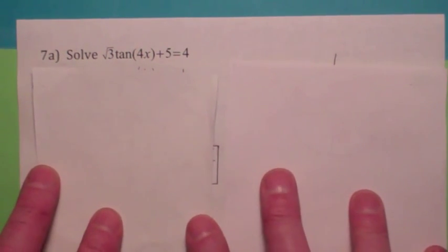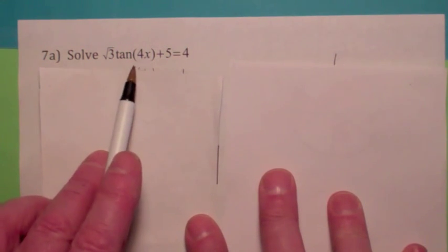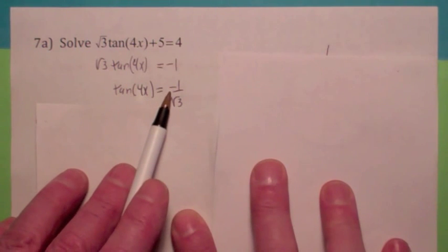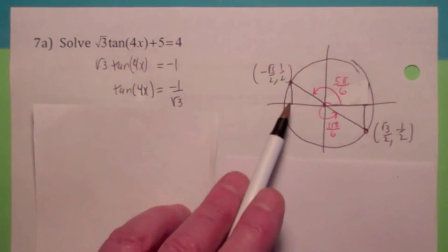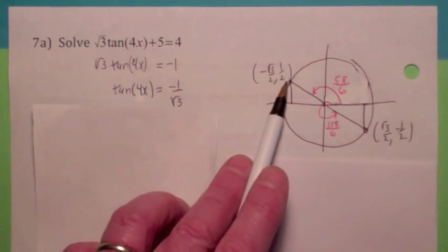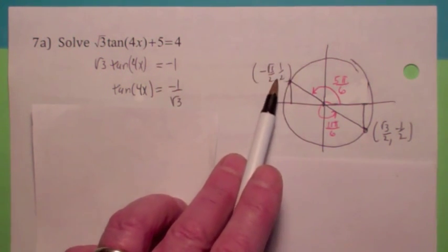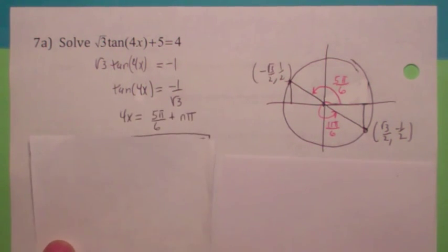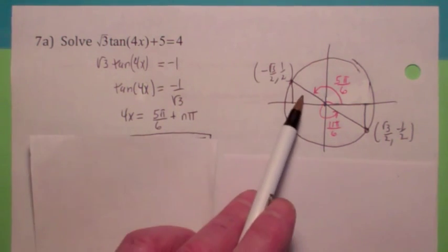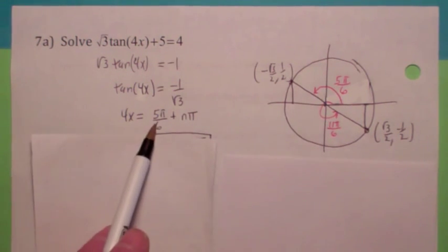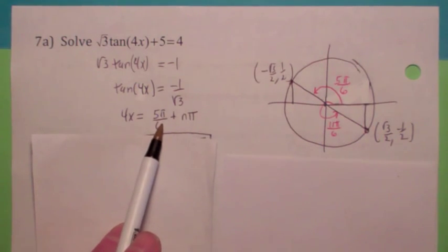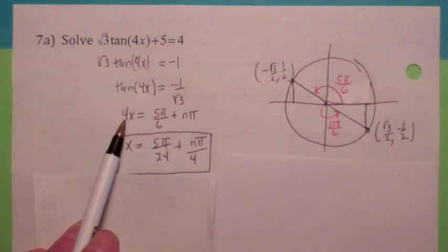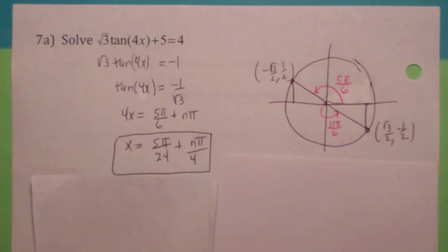How about this one — notice this is the tangent of 4x, which is tricky. You subtract 5 over and divide by radical 3. You should recognize the tangent of something being negative 1 over radical 3 — that's a known angle. In the second quadrant, 5 pi over 6 has tangent negative 1 over radical 3, and in the fourth quadrant, 11 pi over 6 also has tangent negative 1 over radical 3. Since the tangent period is pi, 4x equals 5 pi over 6 plus n pi represents all possible angles. The last step is to divide everything by 4 to solve for x: x equals 5 pi over 24 plus n pi over 4. That is all possible angles that make the equation true.